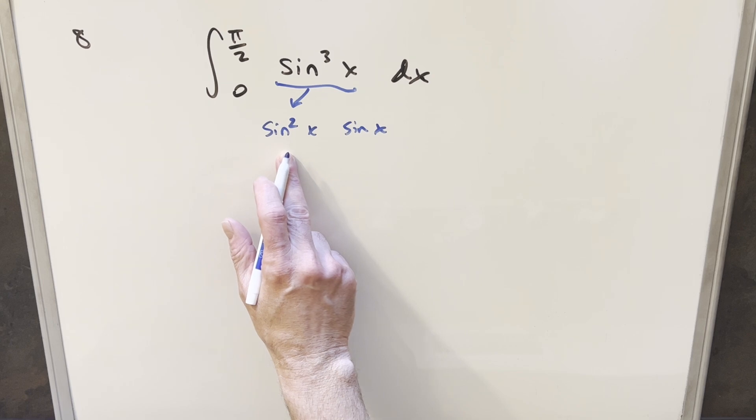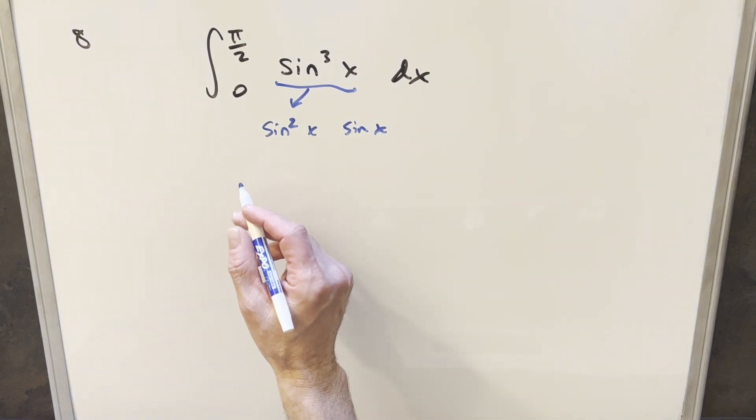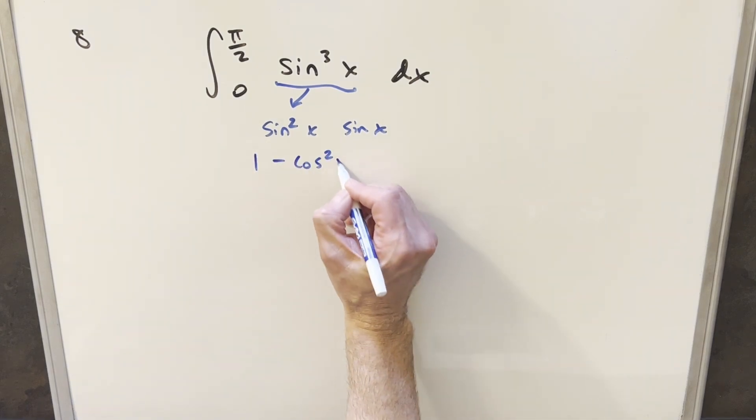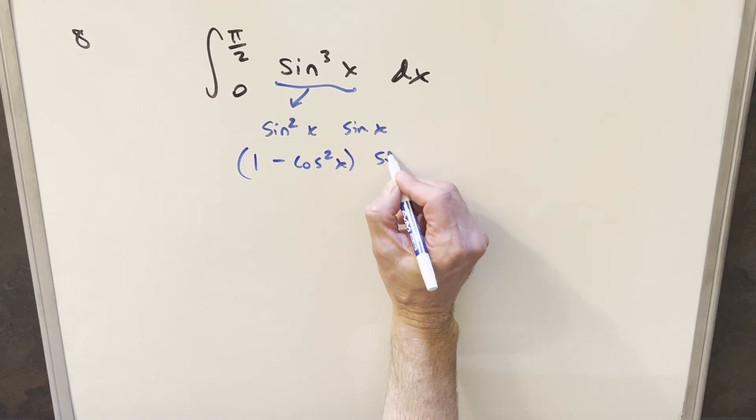By doing that, I can use the identity on sin²x. I can rewrite this as (1 - cos²x) times sin x.